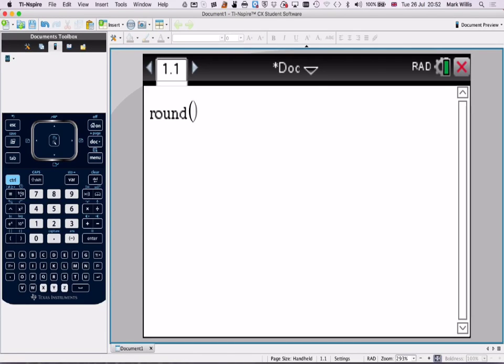Then you enter the number you want to round, which is 56.057. Put in a comma, then the number of decimal places you want to round to, which is one in this case. Press enter, and you get the answer straight away: 56.1.